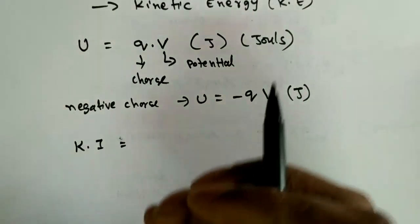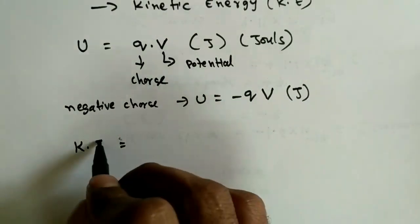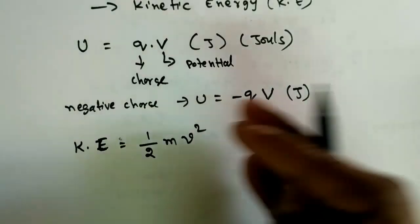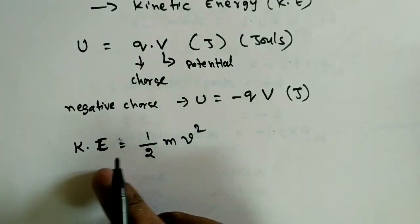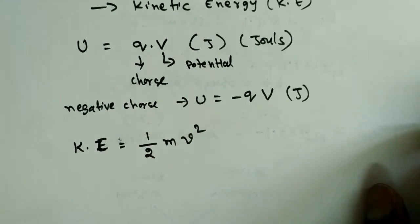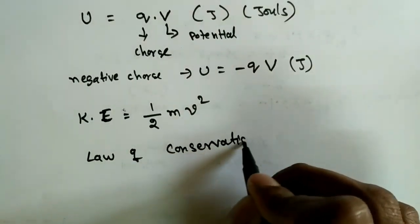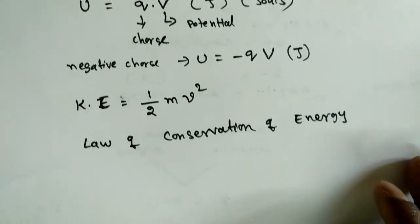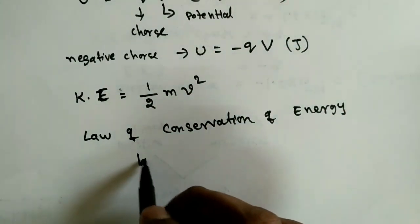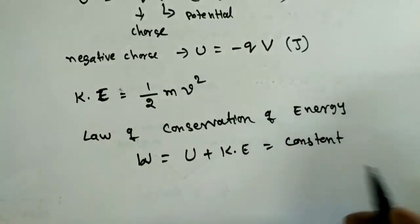For kinetic energy, when electrons are excited they travel with some velocity v, and since they have mass m, the kinetic energy is KE = ½mv². Here, lowercase v is the velocity of the moving charge. Now remember the law of conservation of energy: energy is neither created nor destroyed, only transformed. Therefore, the total energy — potential energy plus kinetic energy — remains constant at any point.